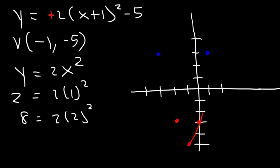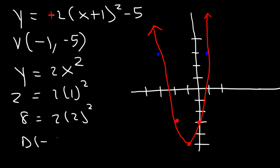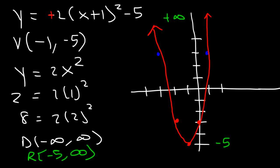Now let's graph it. The domain is all real numbers. The lowest y value is negative 5 and the highest is infinity, so the range is from negative 5 to infinity. Since it opens upward, the minimum value is negative 5. The axis of symmetry is the x-coordinate of the vertex, so x equals negative 1.